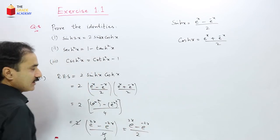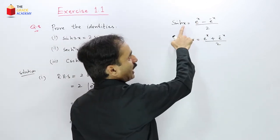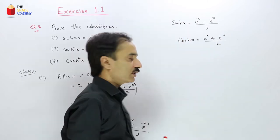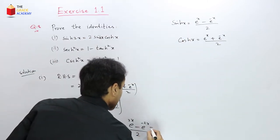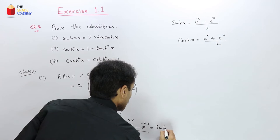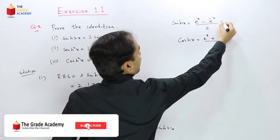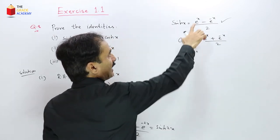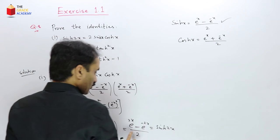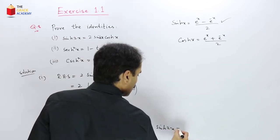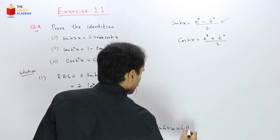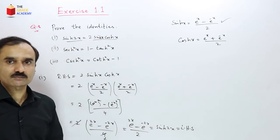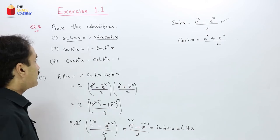So 2·sinh(x)·cosh(x) = sinh(2x), which equals the left-hand side. The right-hand side equals the left-hand side, so the first identity is proved. Now we prove the second identity.